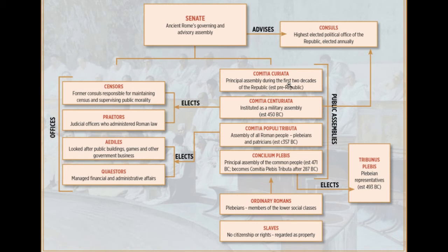The assemblies were the people's assemblies, the people's houses, and they actually had a lot of power. They were able to pass laws and negate laws. They elected every office — different assemblies elected different offices — but they were responsible for electing everyone, except for the Senate, which was handled by the censors.